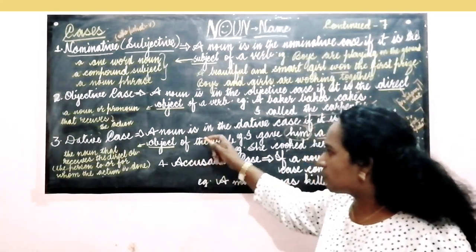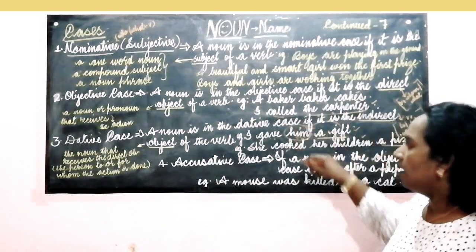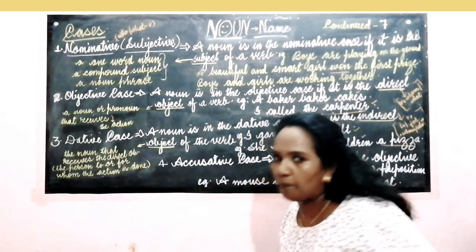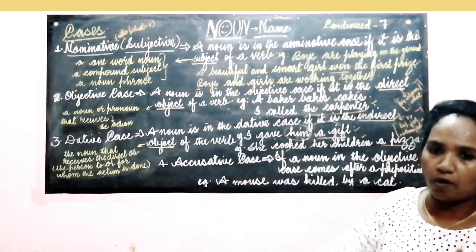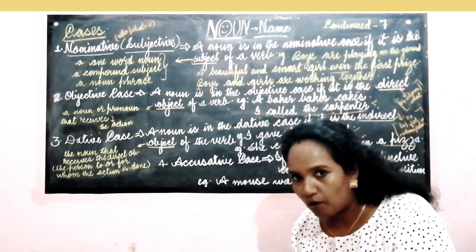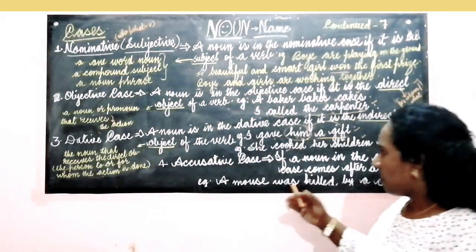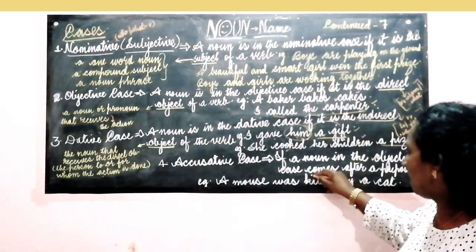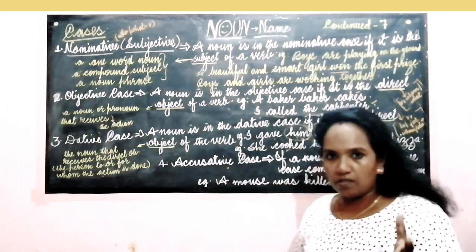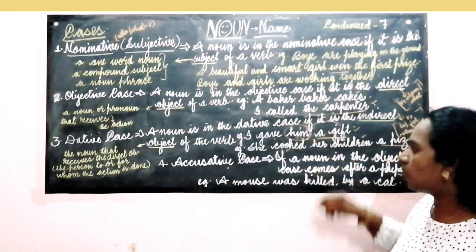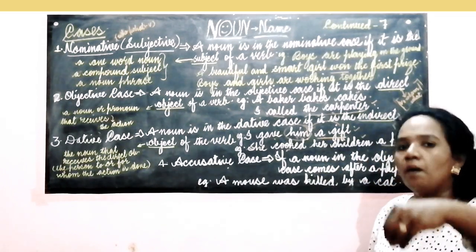Now let us look into the accusative case. The accusative case is also part of the objective case — covering direct and indirect objects. Here the noun comes after a preposition. A preposition is a word used before a noun or a pronoun, and it tells us the relation of that noun or pronoun with the rest of the sentence. Accusative case means if a noun in the objective case comes after a preposition, then it is called an accusative case.